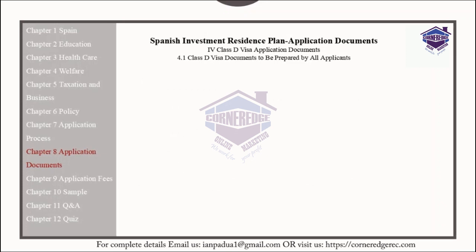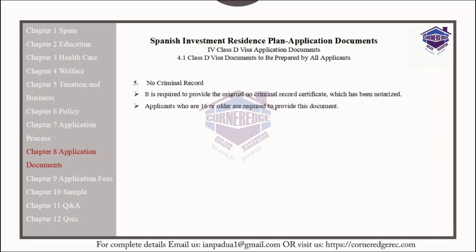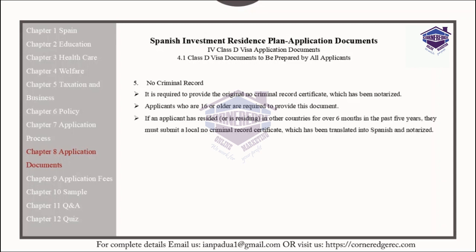For the non-criminal record, it is required to provide the original no-criminal record certificate that has been notarized. Applicants 16 years or older are required to provide this document. If an applicant has resided or is residing in other countries for over six months in the past five years, they must submit a local no-criminal record certificate, which has been translated into Spanish and notarized. This document must be valid for at least three months.